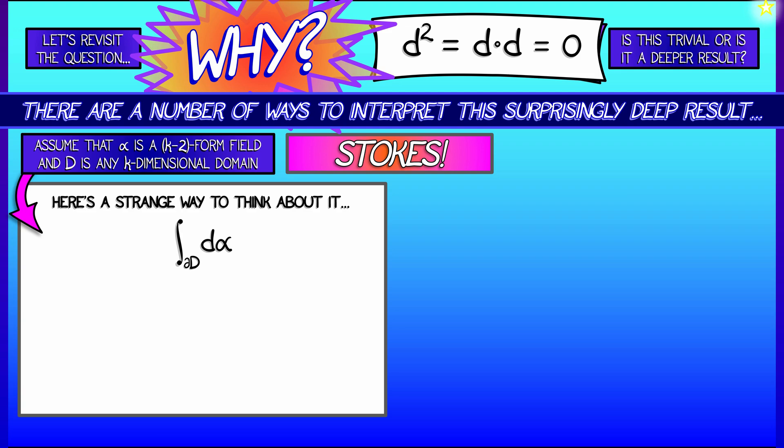Well, instead of integrating the derivative of alpha, we can integrate alpha over what? Over the boundary of what we were integrating over before. So that means that this is equal to the integral of alpha over the boundary of the boundary of d.